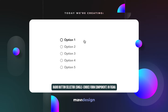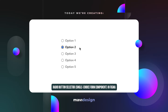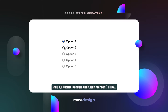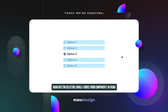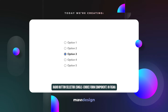Hi everyone and welcome to another Figma tutorial. In this video we're going to take a look at creating a radio button selector in Figma. Radio buttons, as opposed to checkboxes, are usually single choice — meaning when we create a component like this, there is usually only one option to select, so you can't check multiple options, just need to choose a single one.